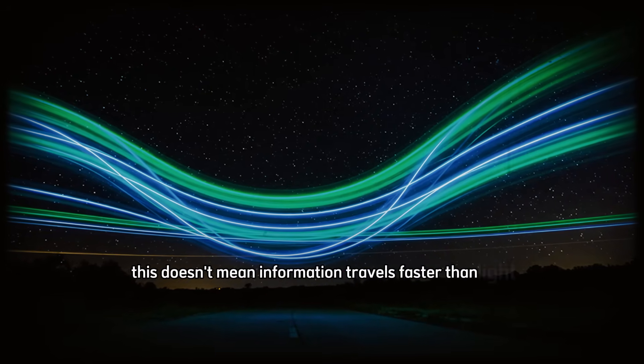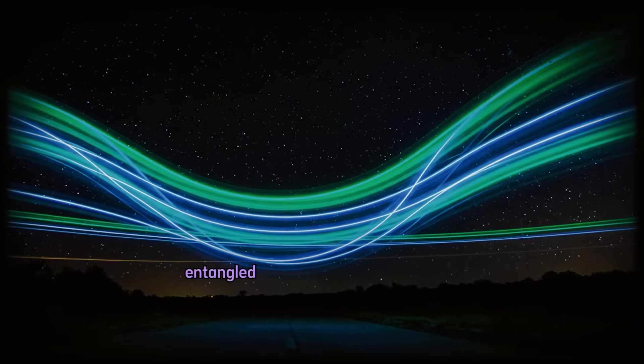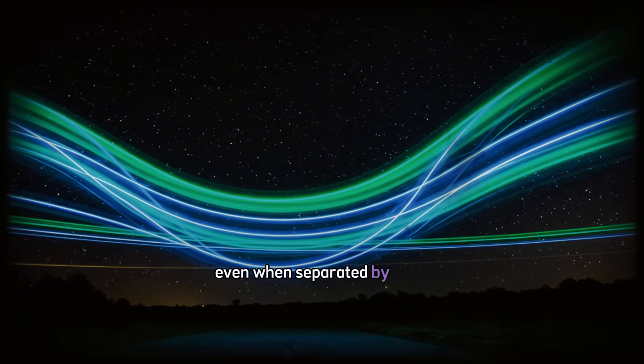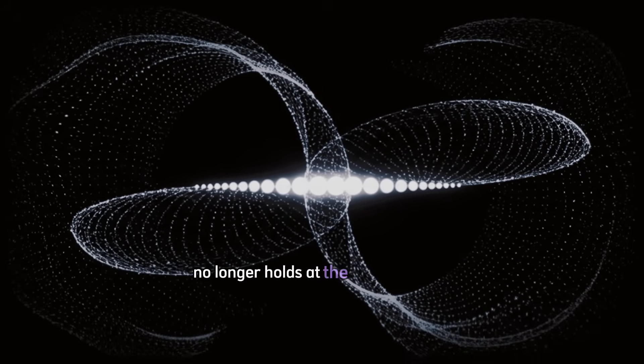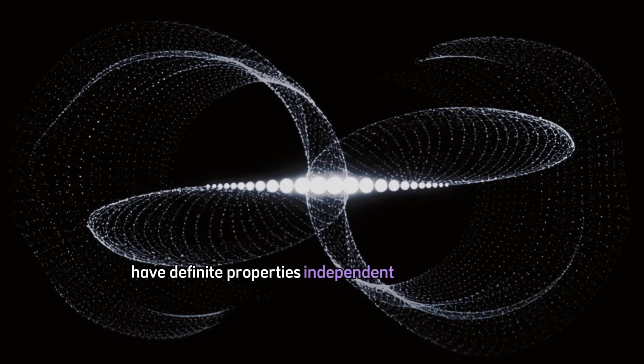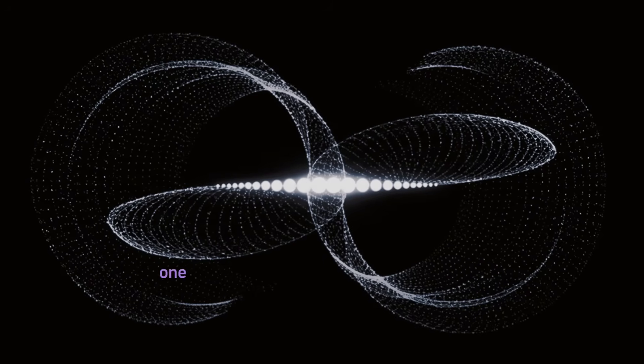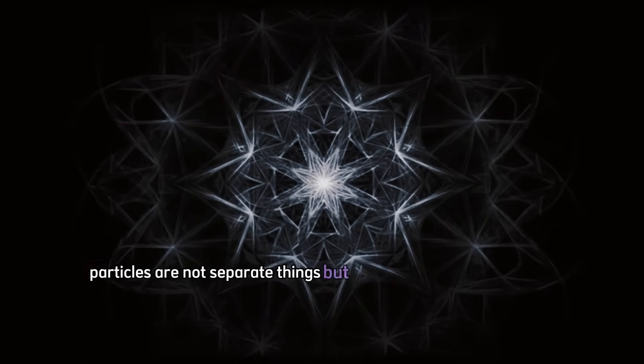This doesn't mean information travels faster than light. It means the usual idea of distance breaks down. Entangled particles don't communicate. They act as parts of a single, unified system, even when separated by miles. The implications are serious. Locality, the principle that objects are only influenced by their surroundings, no longer holds at the quantum level. Neither does the idea that particles have definite properties independent of measurement. Some theorists suggest entanglement reveals a deeper layer of reality. One where space and time aren't fundamental, but emergent from more basic relationships. In this view, particles are not separate things, but expressions of shared states.